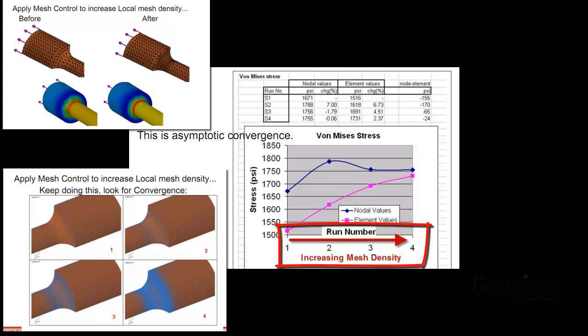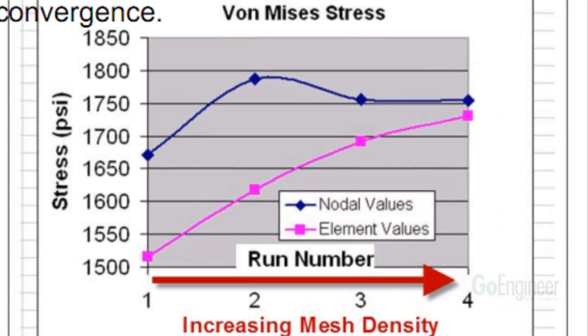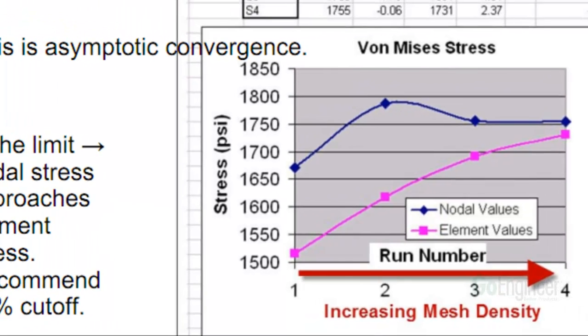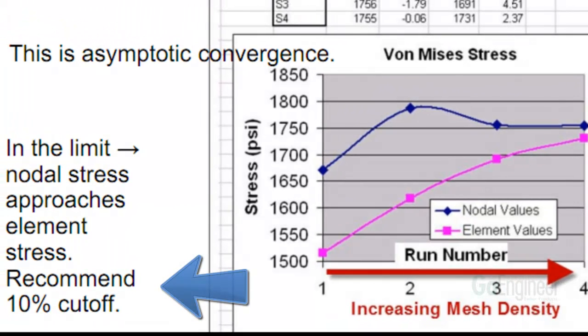We've recorded the values of maximum nodal and element stress for each case. Notice the two curves start to approach one another as the mesh density is increased. A recommended mesh refinement stopping criterion is when you get to about 10% difference between the two. This value is recommended because laboratory test data frequently have a spread of about 10%. You can therefore claim convergence for the stresses in this model are within 10%.